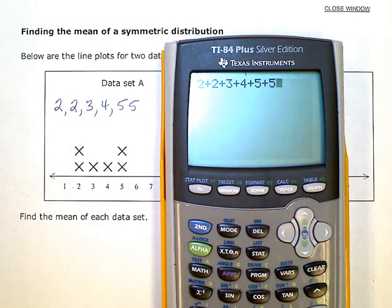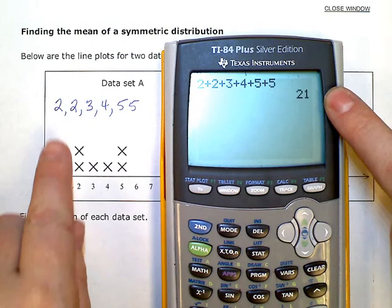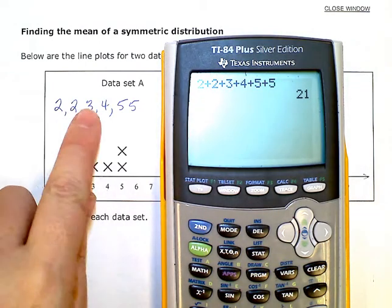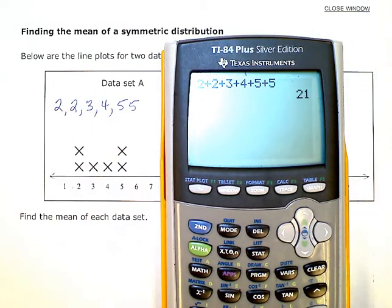And then take that answer 21 and divide by 1, 2, 3, 4, 5, 6. I have six data points. So my mean is 3.5.